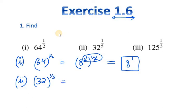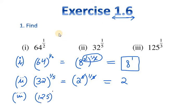The second part is 32 raised to the power 1 over 5. We know 32 can be written as 2 raised to power 5, and with the exponent 1 over 5, the 5s cancel out and we are left with 2. The third part is 125 raised to the power 1 over 3. Since 125 equals 5 cubed, the 3s cancel out and we are left with 5.